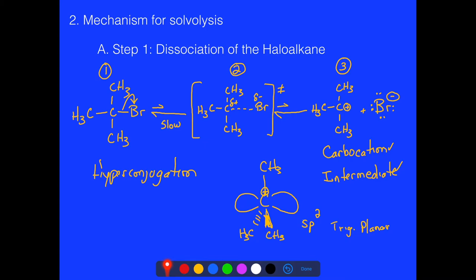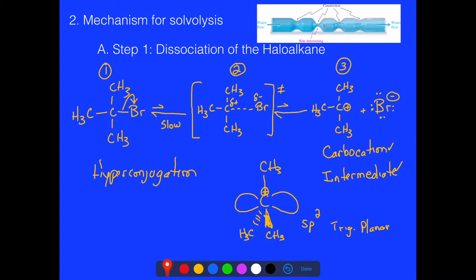That's the first step in the mechanism — the dissociation of the bromine group. We'll continue on and redraw this for the next step. The bromine won't be redrawn because it's a leaving group — it goes out into the water solvent and becomes a spectator ion, the inorganic product.